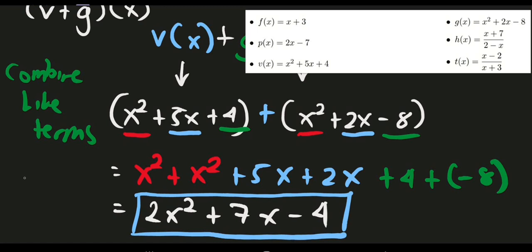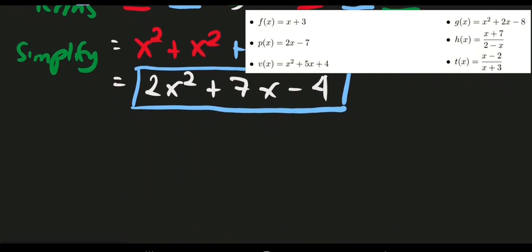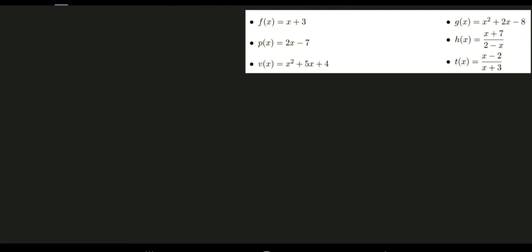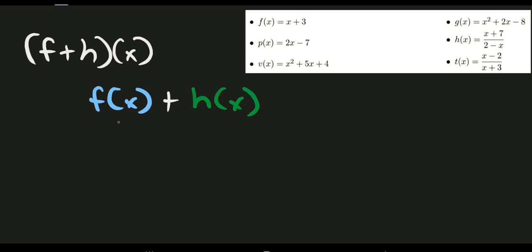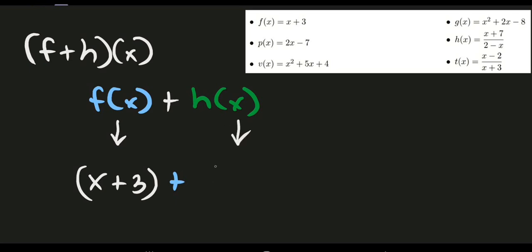For step two, just combine like terms and simplify. Now let's answer another problem: adding function f plus h of x. That means we need to simply add the contents of function f, which is x plus 3, to the contents of function h, which is x plus 7 all over 2 minus x.